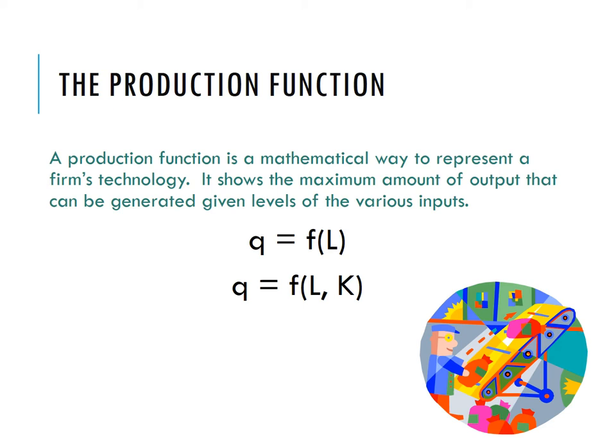The production function is analogous to our utility function. The utility function gave us the highest satisfaction when we consume two goods. The production function gives the highest output when the firm uses different levels of inputs like labor and capital.